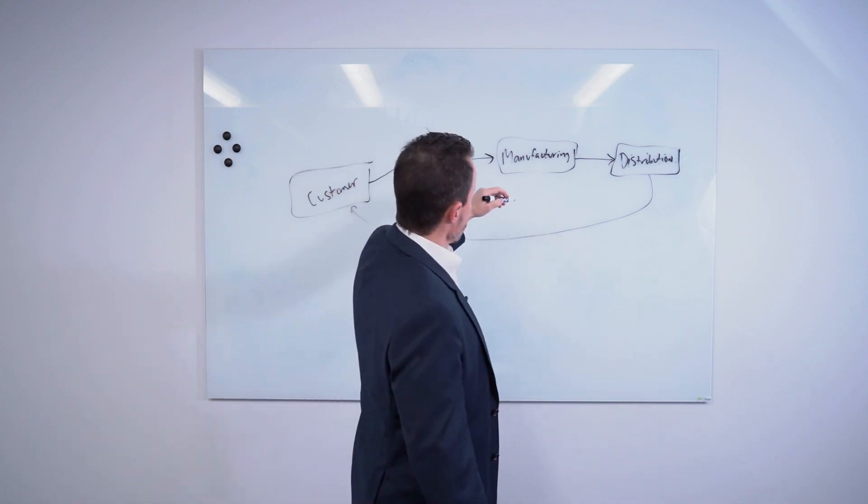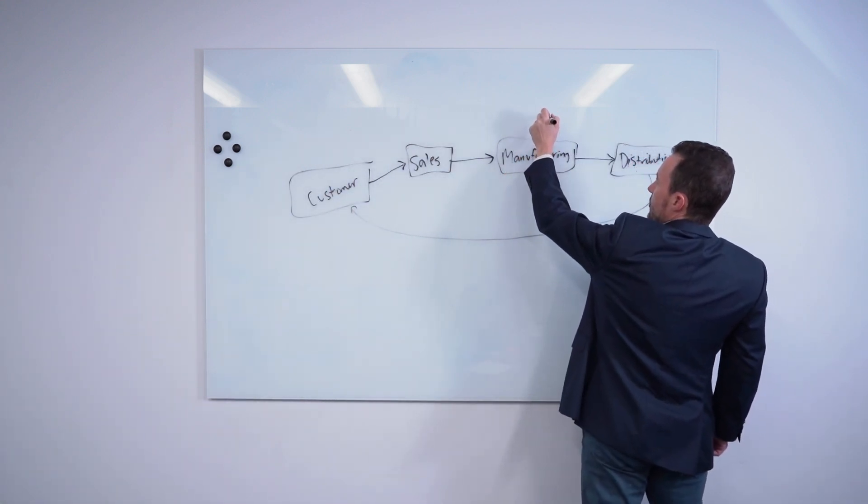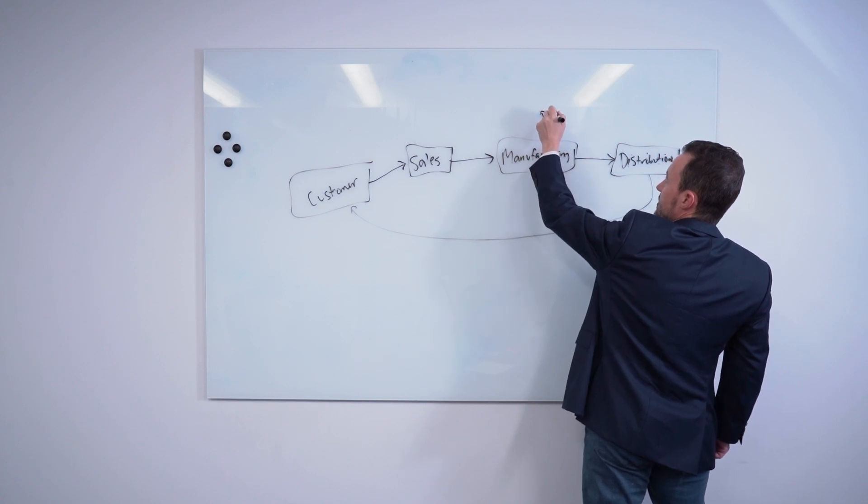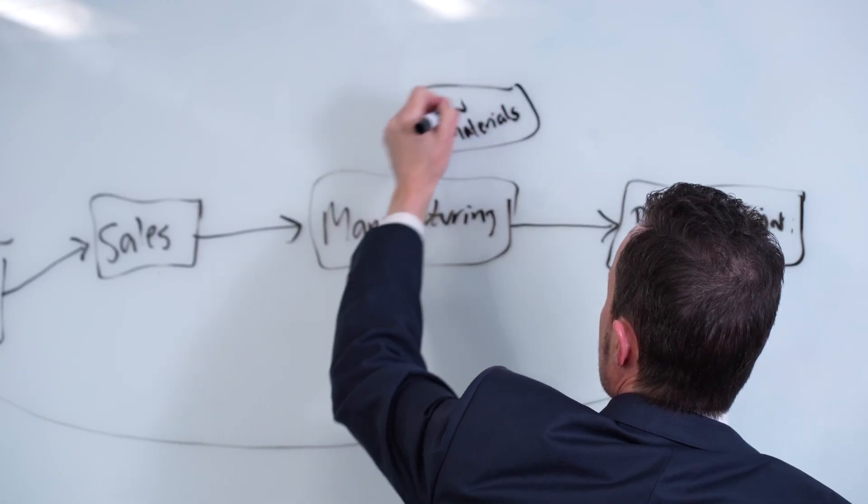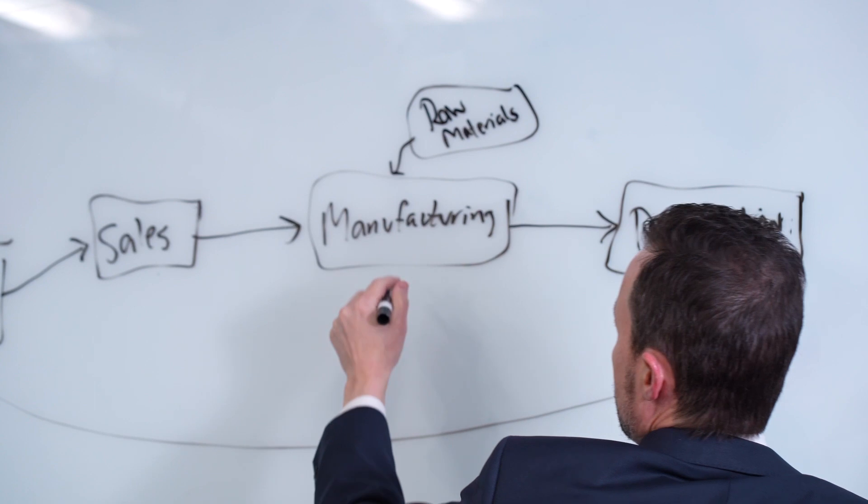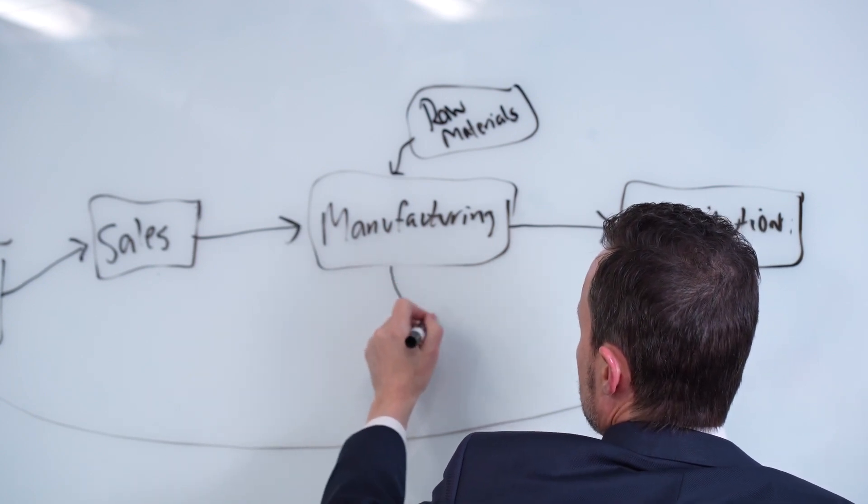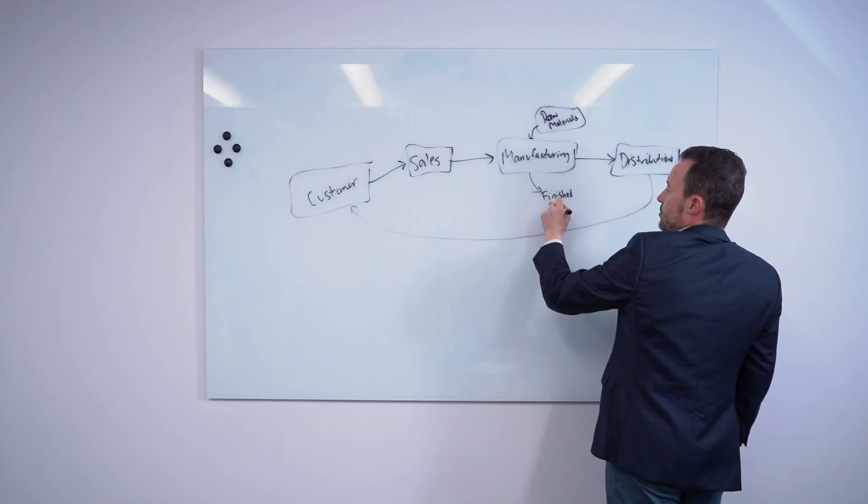Now within the manufacturing piece of it, you actually have a couple of little sub process here that are worth noting. You've got raw materials that typically come into the manufacturing process. And so that entails buying raw materials from your suppliers. And then you've got finished products here. So your finished goods or components or whatever it is you're producing for your customers are here.